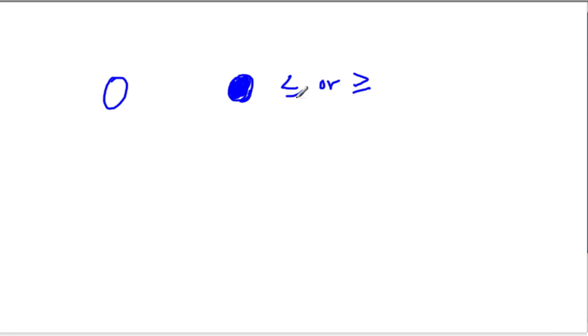So this little line means equal to, then you're going to deal with this filled in dot. If you have an open circle, this is referring to the less than sign or the greater than sign.